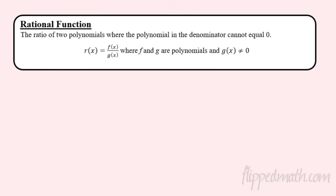Alright, welcome to Unit 1B. We're going to do rational functions, which is just building off of polynomials from 1A. The definition is we're going to take two polynomials and stack them — so when you take some function f and divide it by g of x, that is a rational function. It's just the division of two polynomials.